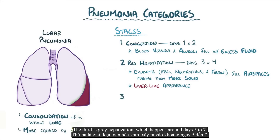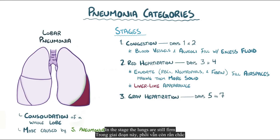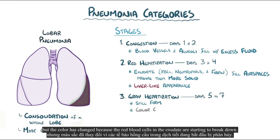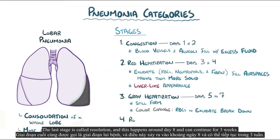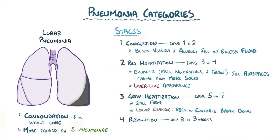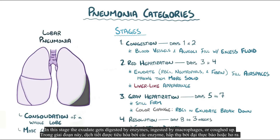The third stage is gray hepatization, around days five to seven. The lungs are still firm, but the color changes because the red blood cells in the exudate are starting to break down. The last stage is called resolution, around day eight and continuing for up to three weeks. In this stage the exudate gets digested by enzymes, ingested by macrophages, or coughed up.